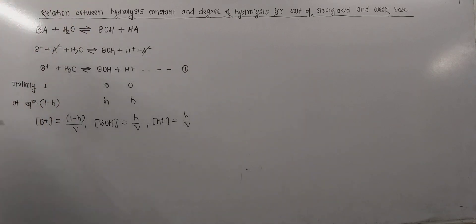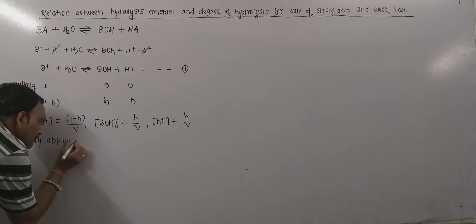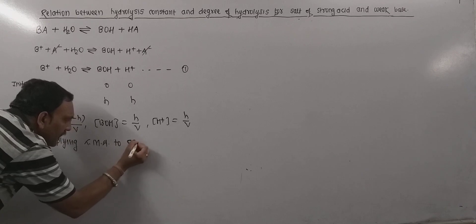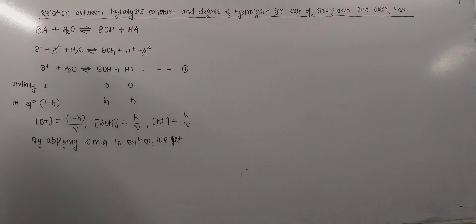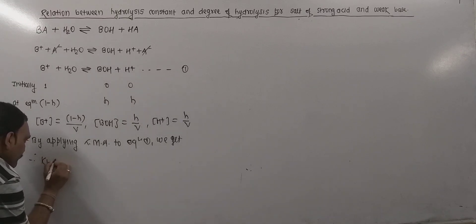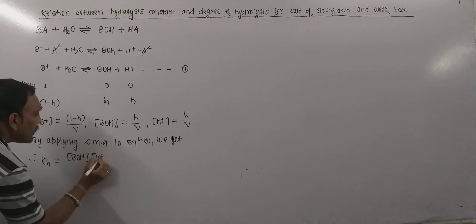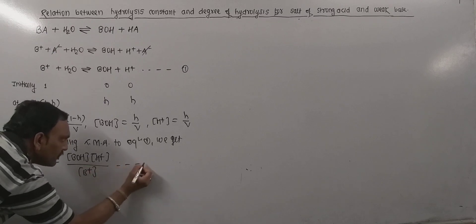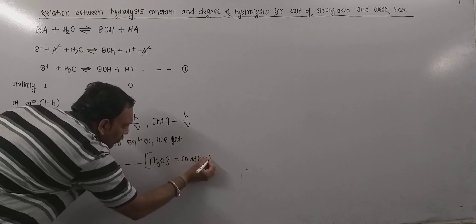Now if the law of mass action is applied to equation 1, we get the hydrolysis constant for this salt. So KH equals concentration of BOH multiplied by concentration of H⁺, divided by concentration of B⁺. The concentration of water remains practically constant, so it is excluded.